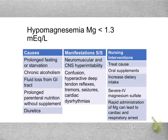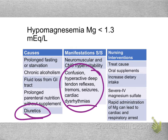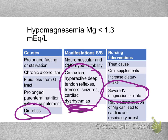Low magnesium typically happens when patients aren't getting enough in their diet, have absorption problems, or are on diuretics, which cause you to lose magnesium similarly to potassium. Low magnesium causes neurological defects and dysrhythmias. To increase it, boost dietary intake, give oral supplements, or give it IV if needed — given slowly like potassium, because we don't want to cause cardiac arrest.